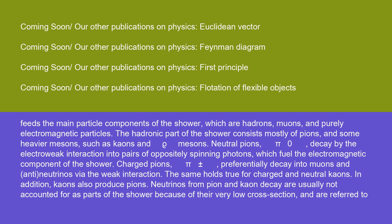The interaction and decay of particles in the shower core feeds the main particle components of the shower, which are hadrons, muons, and purely electromagnetic particles. The hadronic part of the shower consists mostly of pions and some heavier mesons, such as kaons and rho mesons. Neutral pions, pi-zero, decay by the electroweak interaction into pairs of oppositely spinning photons, which fuel the electromagnetic component of the shower.